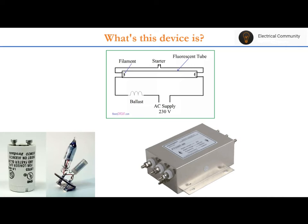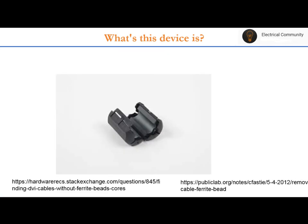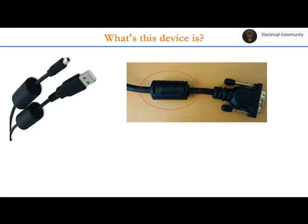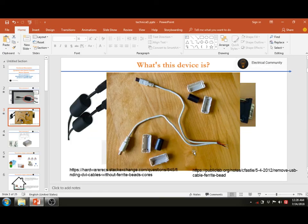If you want to protect your device from radiation, you can go for shielding. Shielding is simply a kind of cage created inside which the device is kept, and that is how the device is protected against radiated EMI. If you have any further questions, you can post them and I will answer in upcoming videos. Thank you.